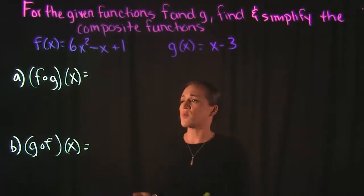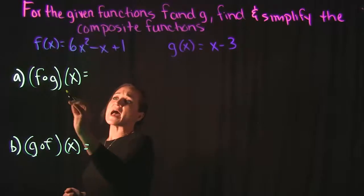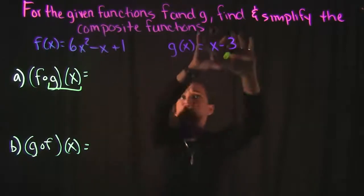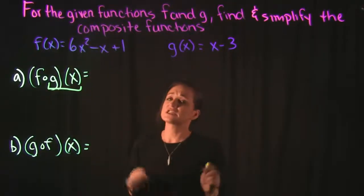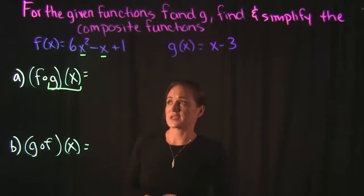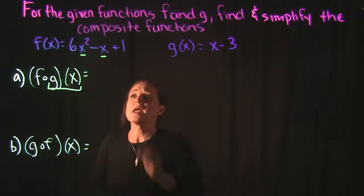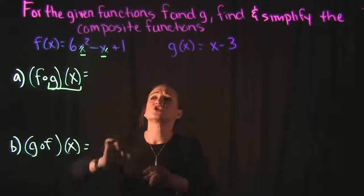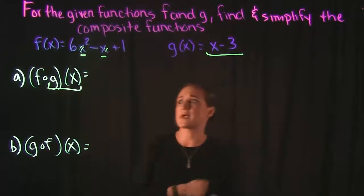For example a they want us to find f of g of x. So what that's asking us to do is take g of x and plug it into f of x. Specifically plugging it into x with f of x here. So f of x is 6x squared minus x plus 1. Instead of the x's here I'm going to replace those x's with g of x which is x minus 3.